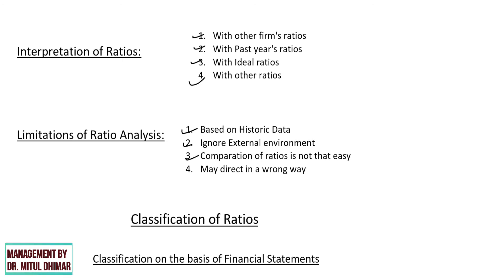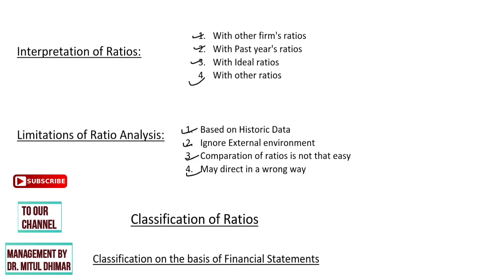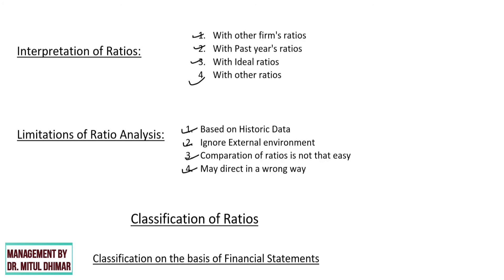Third, comparison of ratios is not that easy. We may compare ratios with other firms' ratios, but it is hard to get the data of those firms and accounting policies may be different. If we compare with our own past ratios, the problem may occur that in the past we might have used different accounting policies. Also, ideal ratios and proper standards for comparison are not available. Fourth, ratio analysis may direct in a wrong way, because ratios themselves don't make any decision — managers need to do so, and if managers are not well knowledgeable or experienced, they may end up taking a wrong decision.